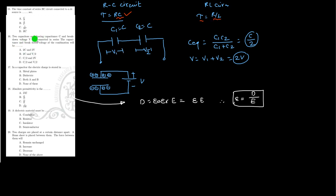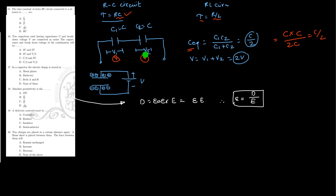Two capacitors, each having capacitance C and breakdown voltage V, are connected in series. The equivalent capacitance and breakdown voltage: equivalent capacitance = C·C/(C+C) = C/2, so capacitance halves. But the breakdown voltage for each is V, so the total voltage rating becomes 2V. Hence, the correct option is capacitance C/2 and breakdown voltage 2V.